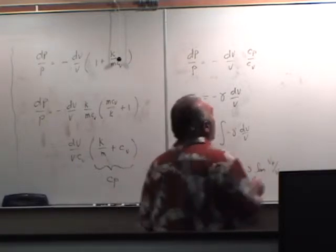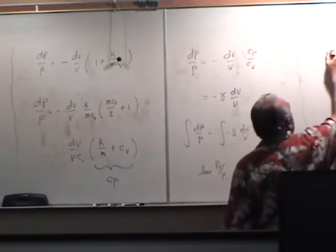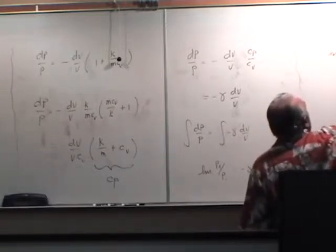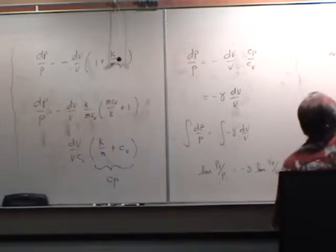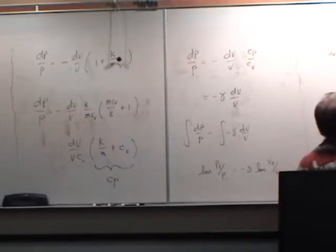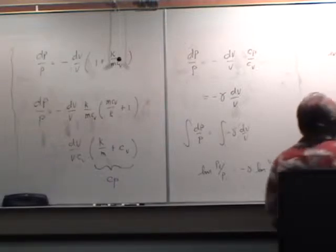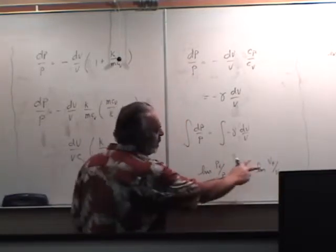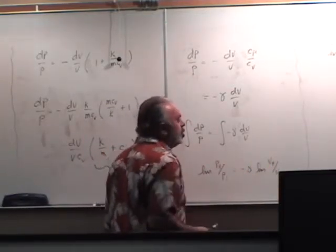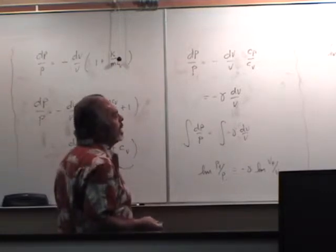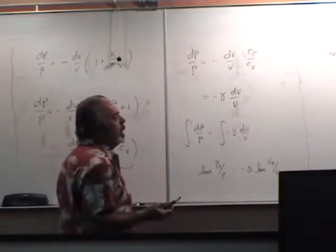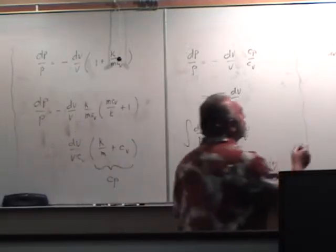But you remember what happens when you put the gamma in there. You get LN of P final over P initial equals LN of V initial over V final raised to the positive gamma power. Well, you exploit the negative sign by flipping the fraction, changing the subscripts, and the gamma becomes a positive power. But of course, if their logarithms are the same, the arguments must be the same.